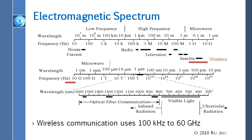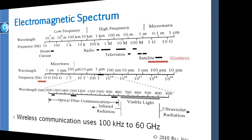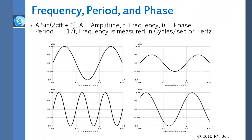Lower frequencies are better for two reasons: they can go around obstacles, and they travel farther. The electromagnetic frequencies are basically sine waves — like when you put a stone on water in a lake, you see a sine wave. A sine wave has an amplitude from top to bottom, and cycles per second. If you count the number of peaks passing one point per second, that gives you cycles per second.